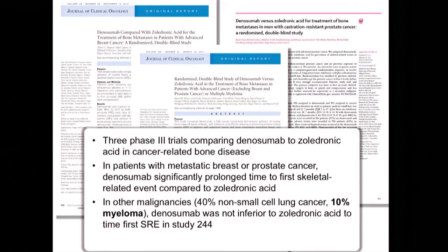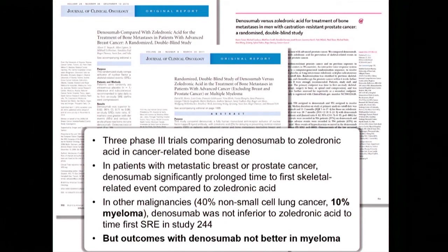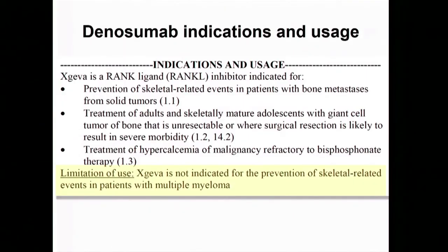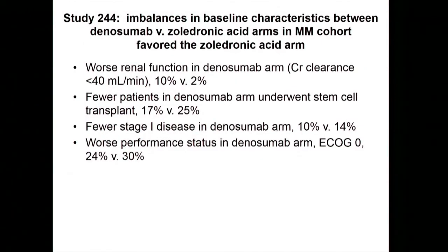Denosumab is a monoclonal antibody — similar to how daratumumab targets CD38 or elotuzumab targets SLAMF7 — that targets RANK ligand and breaks up this vicious cycle. Three phase three trials looked at denosumab across a range of tumor types including breast, prostate, and lung cancer patients with bone problems, finding denosumab was better than Zometa for those patients. However, in multiple myeloma the outcomes weren't better in one of those studies, which was puzzling. The problem was it used a small number of myeloma patients, and those who received denosumab tended to be sicker, inadvertently favoring the Zometa arm — illustrating why we have properly randomized trials.